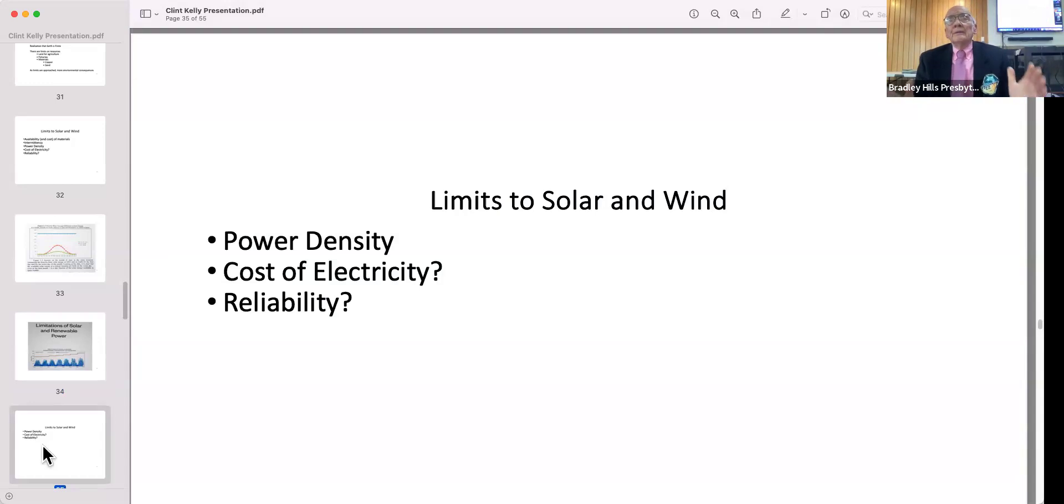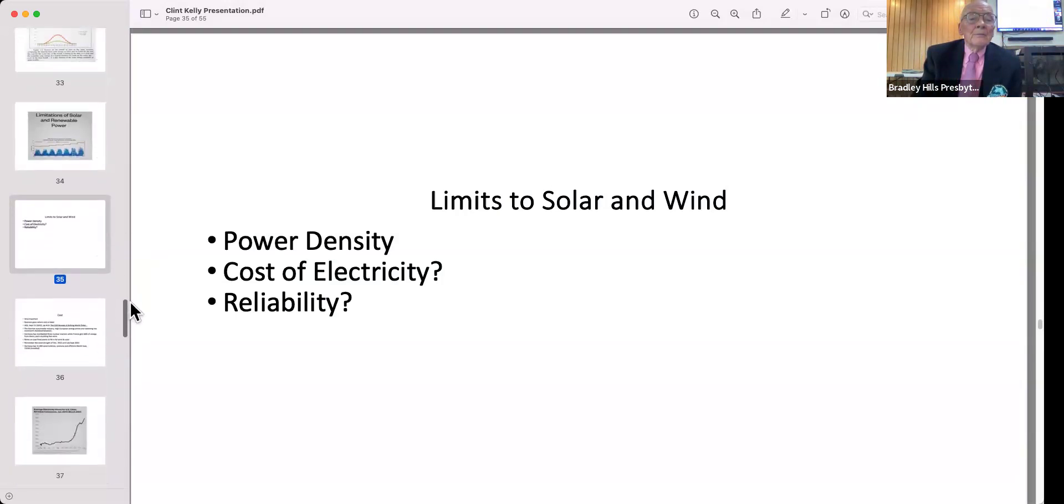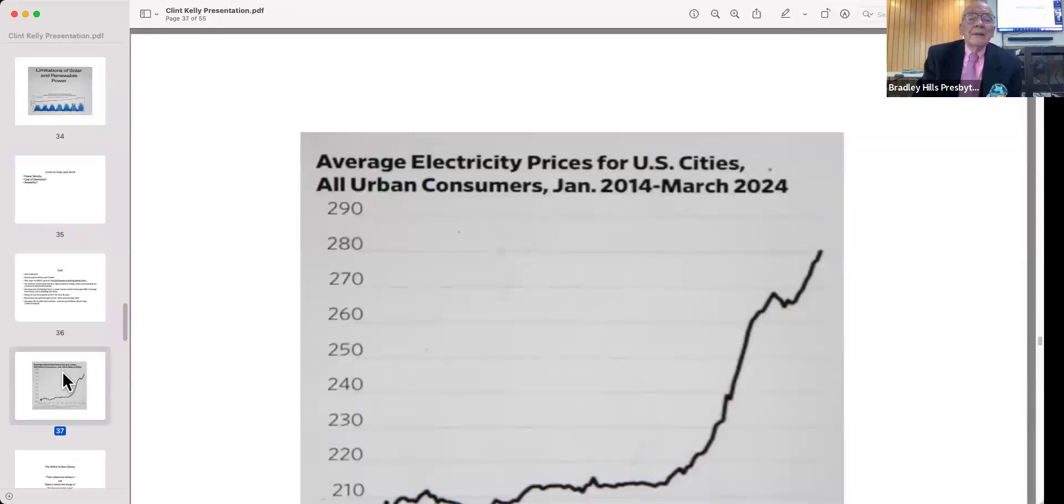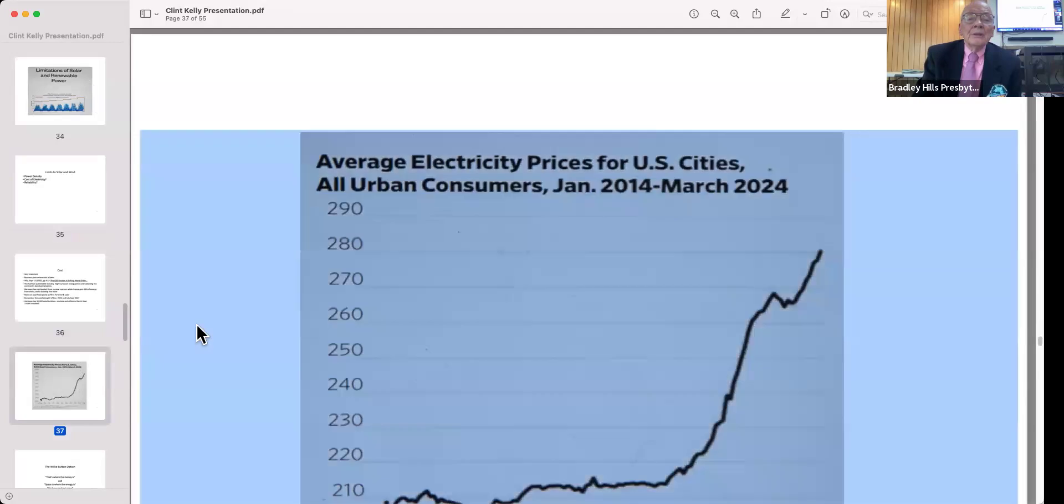Power density is how many watts per square meter do you get from your installation, whether it's solar, wind, or something else. That takes us into the issue of land use. A lot of projects are stopped because they take up too much land. Then of course there's the cost of electricity and the reliability.